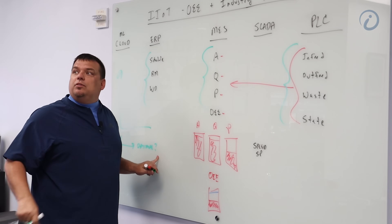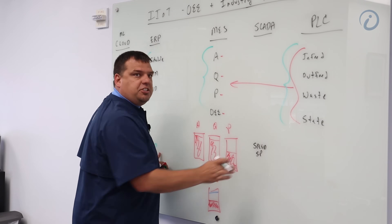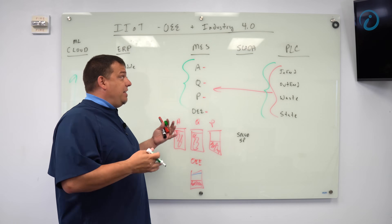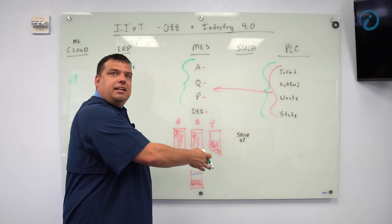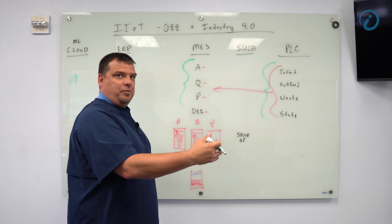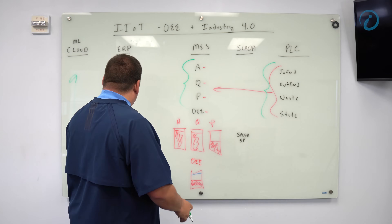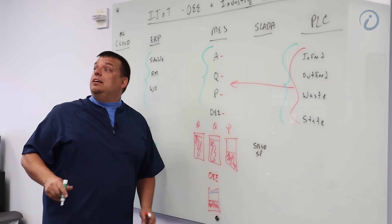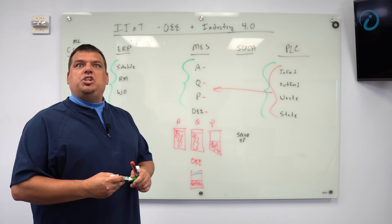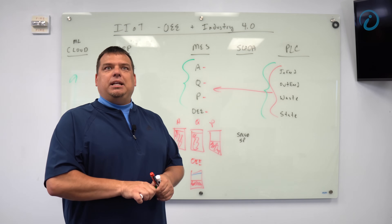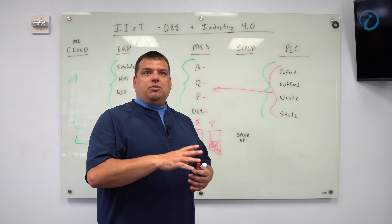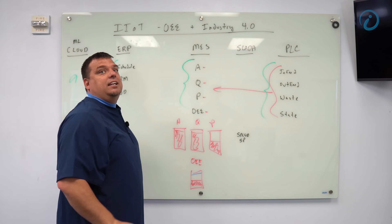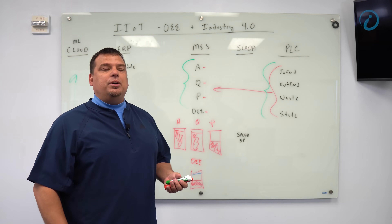Machine learning is looking at the schedule, the OEE calculations of availability, quality, and performance, and the process information — and it's making an optimal decision. It then pushes that decision down. The optimal decision might be: adjust the speed set point by 0.7 up. The operator may execute that. Long term, machine learning is just going to write that directly into the PLC and log it. That's the manufacturing Holy Grail — that is OEE and Industry 4.0 in a nutshell.